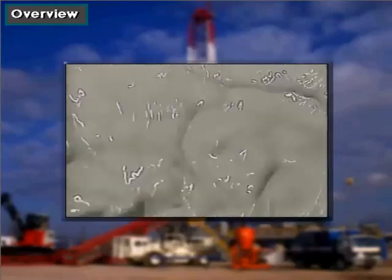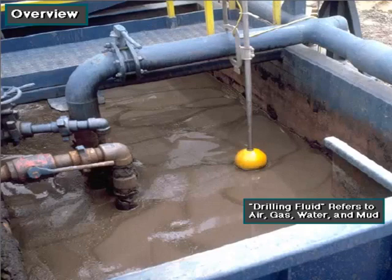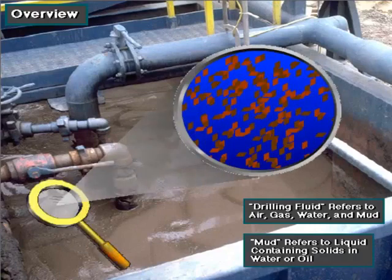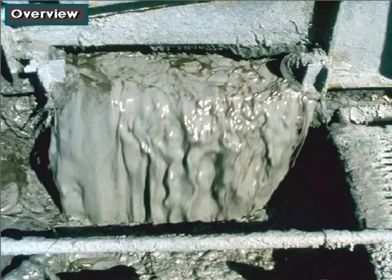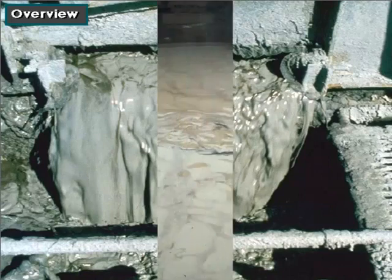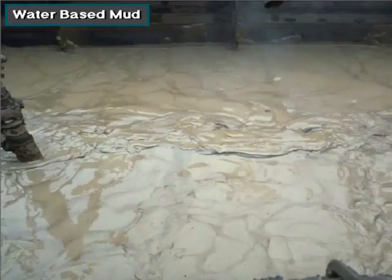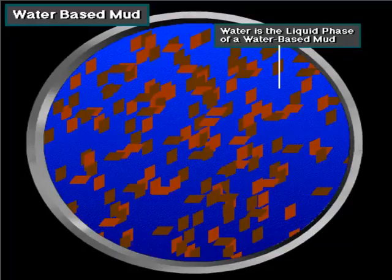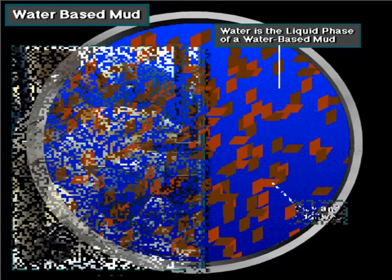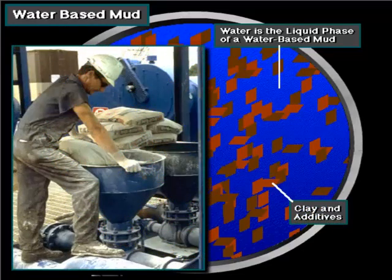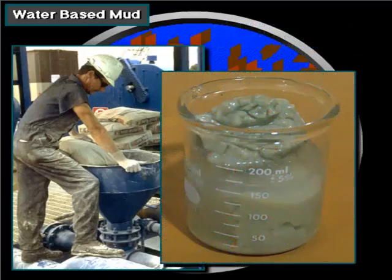Mud, as many people call it, is a vital element of the rotary drilling process. The term drilling fluid includes air, gas, water, and mud. Mud refers to the liquid that contains solids in water or oil. The mud is made up with clay and other additives that give it desirable properties. Often water is the base of drilling mud, making up the liquid part or phase of a water-based mud. Crew members put clay and special additives into the water to make a mud with the properties needed to do its job well. For example, clays give it thickness or viscosity.